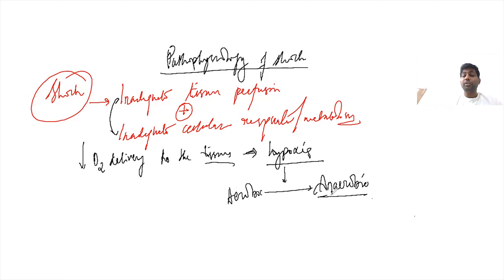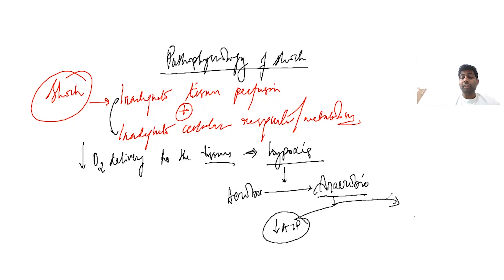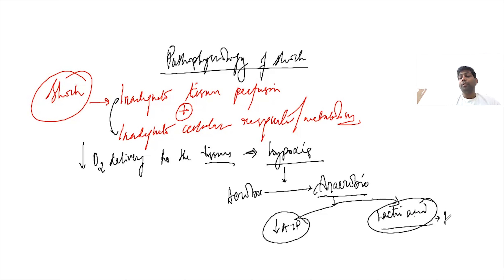Anaerobic respiration does not produce the amount of ATP that aerobic respiration produces, so there is a deficiency of ATP in the cells and cellular respiration is decreased. Additionally, anaerobic respiration produces lactic acid, which leads to metabolic acidosis.